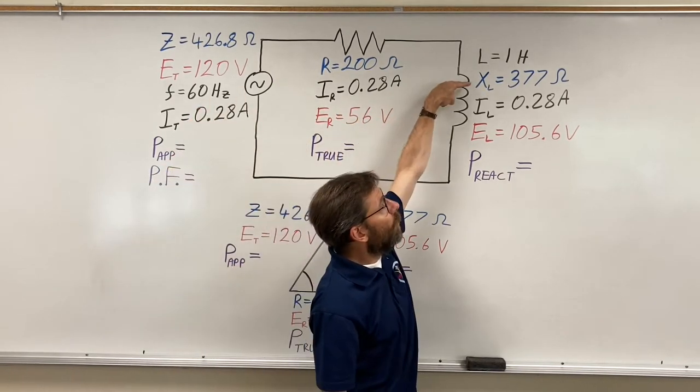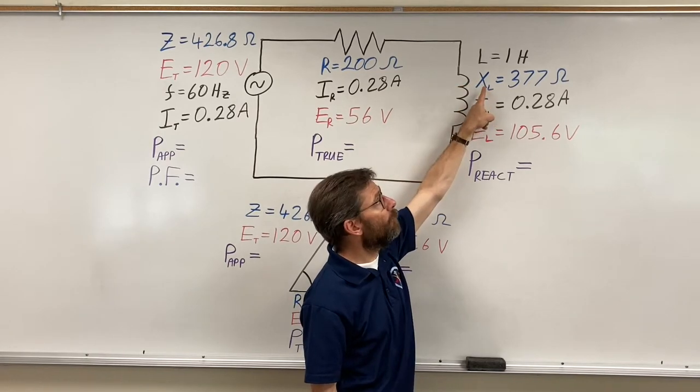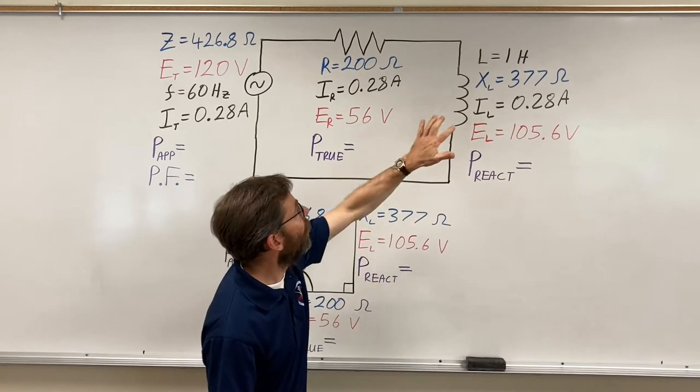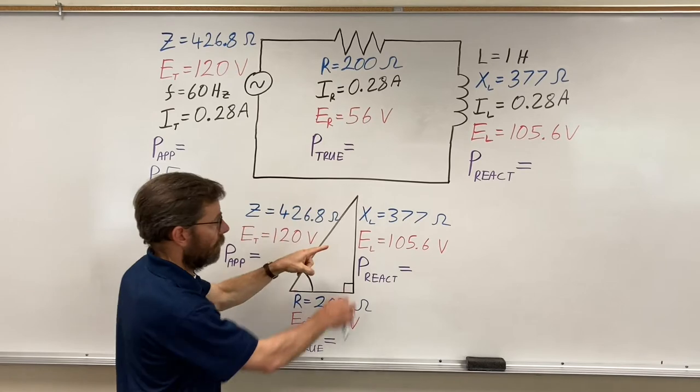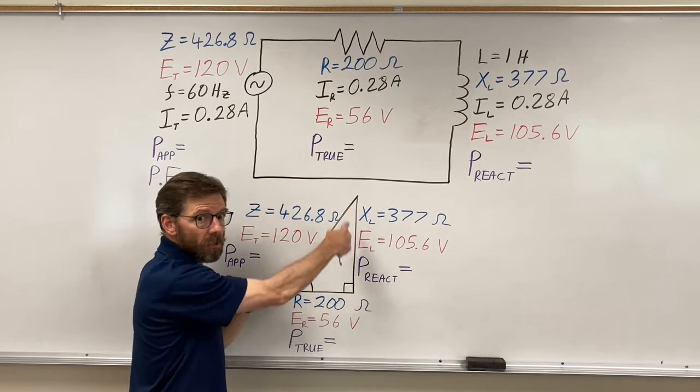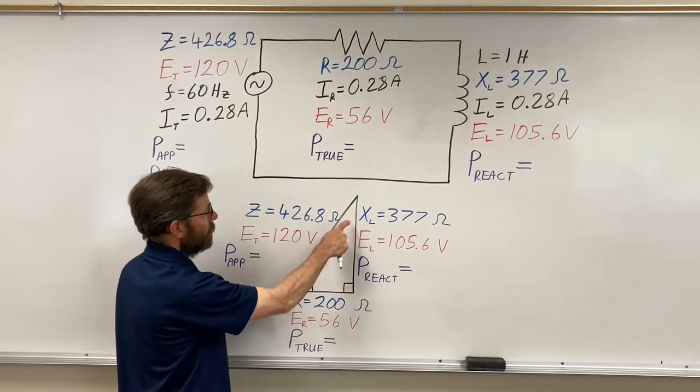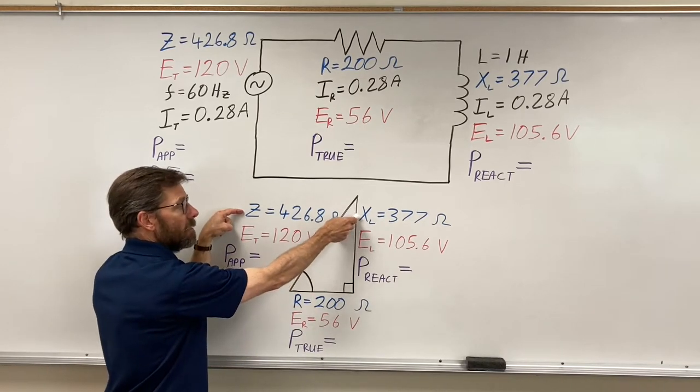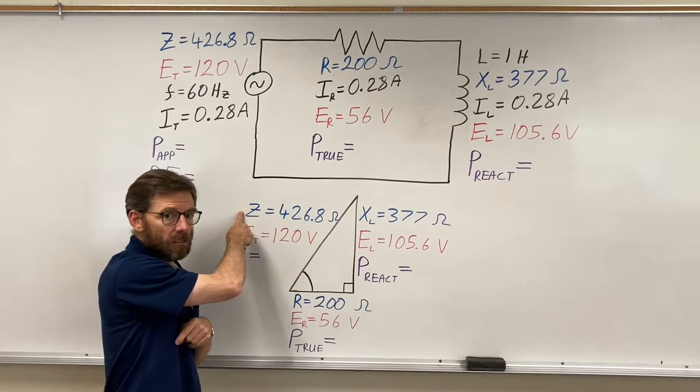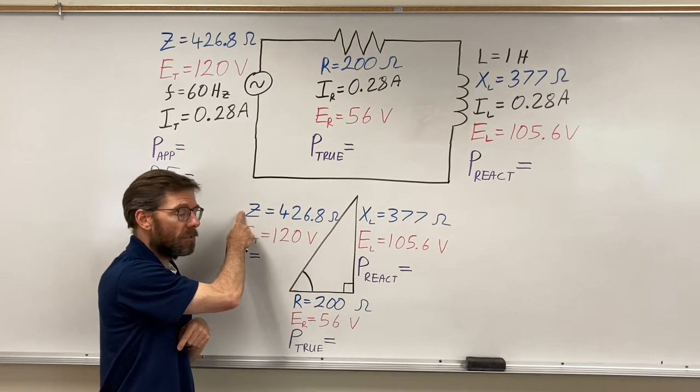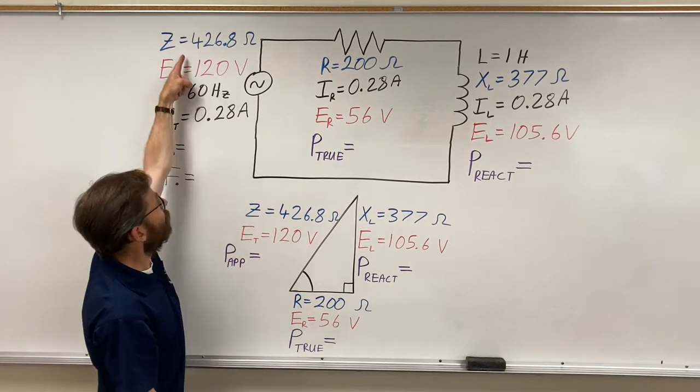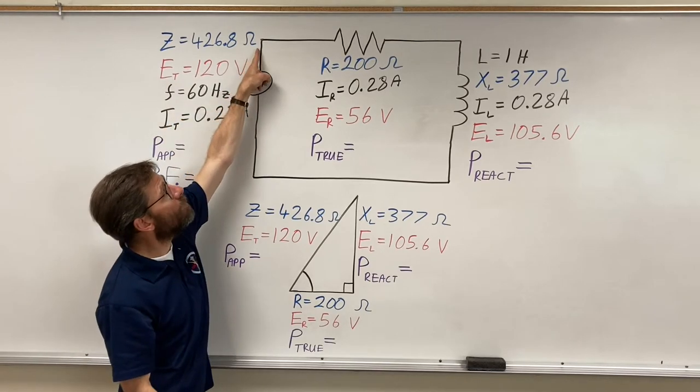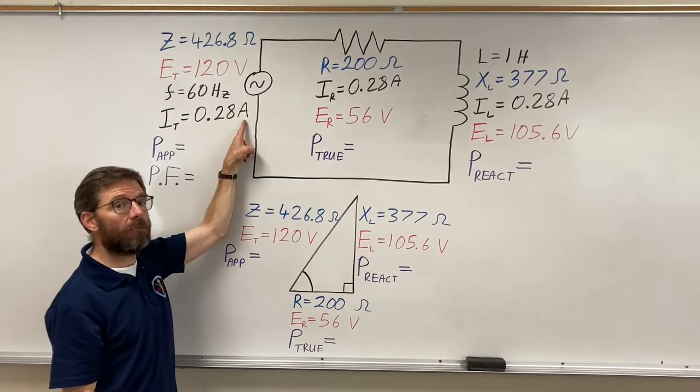We figured out all the rest. Because the frequency was 60 Hertz, we could figure out the inductive reactance of the inductor was 377 ohms. We combined that with the resistive ohms using Pythagorean theorem to get our total impedance Z. Once we had our impedance, we could figure out our current because we had ohms and volts.